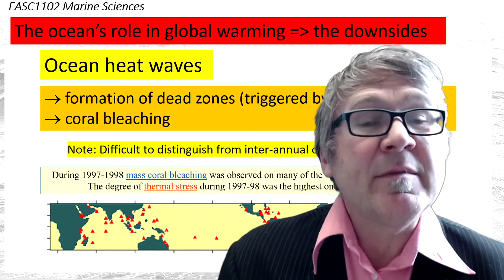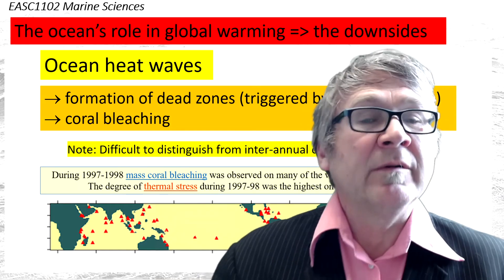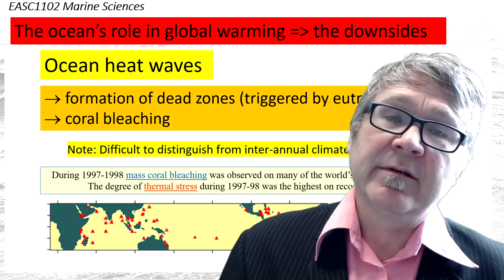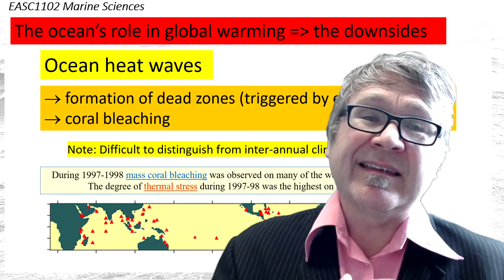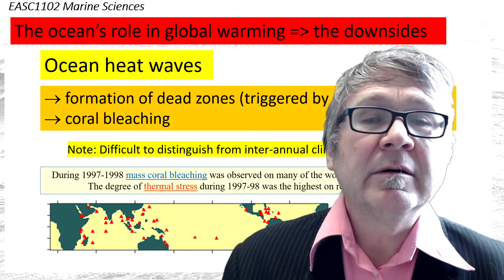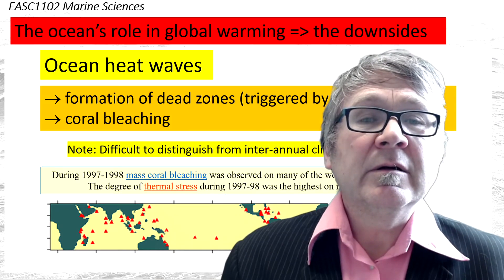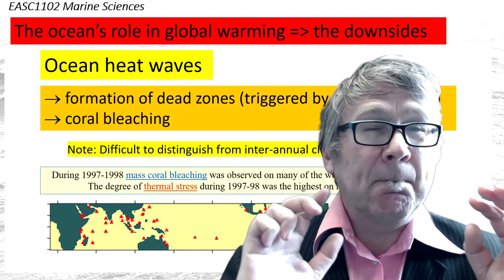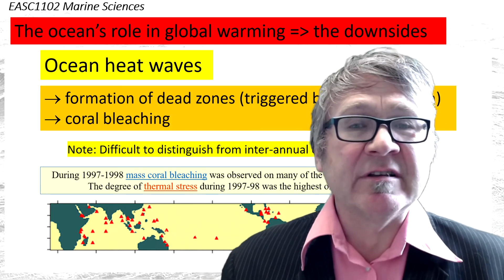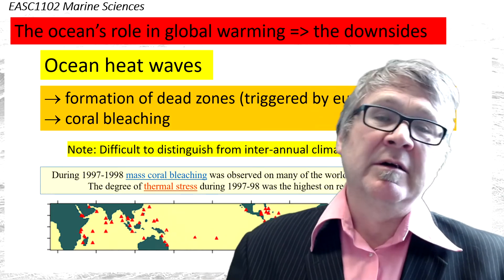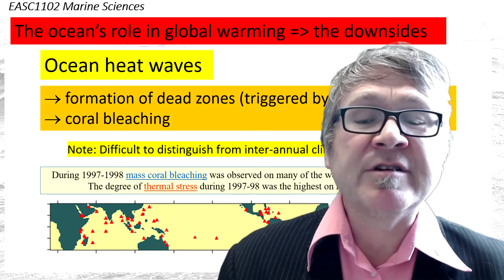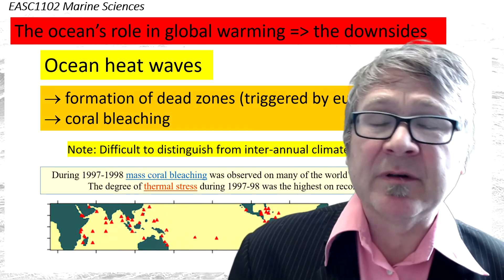We're talking about extreme events which occur on timescales of weeks, that can in the end be related to the global warming trend, but not always. Sometimes it's tricky to distinguish these events. If you have a big El Niño event, it can cause widespread coral bleaching.